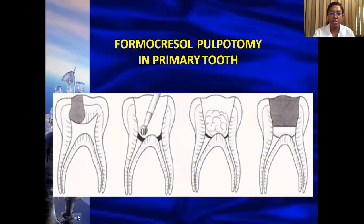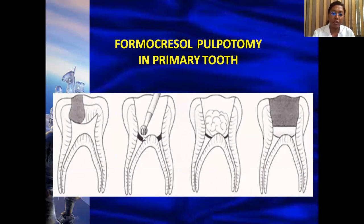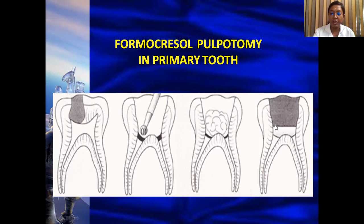This picture shows formocresol pulpotomy in a primary tooth. The caries involves the pulp and only the coronal pulp is removed with a large round bur. Hemorrhage control is achieved, then a cotton pellet soaked with formocresol solution is placed at the level of the cementoenamel junction. Once that is done, calcium hydroxide is placed as the medicament over which a temporary restoration is placed.